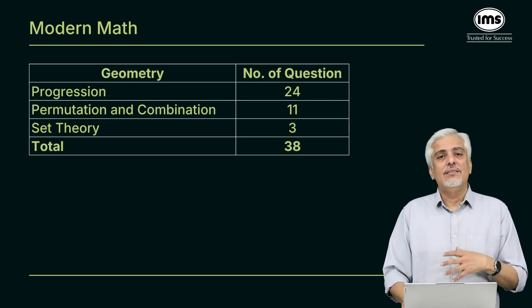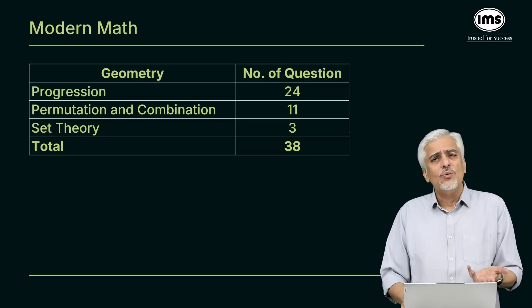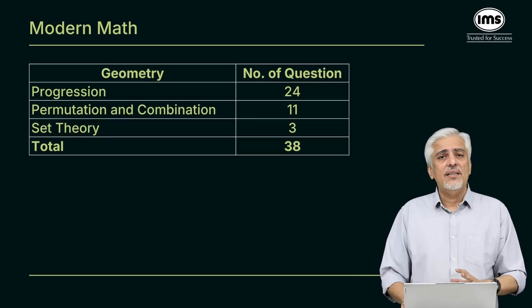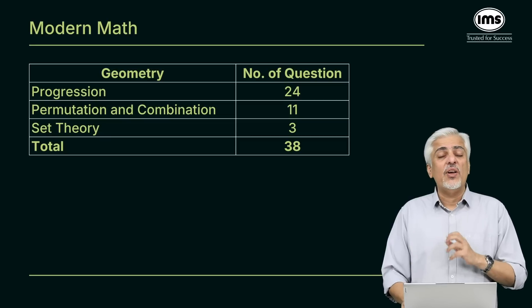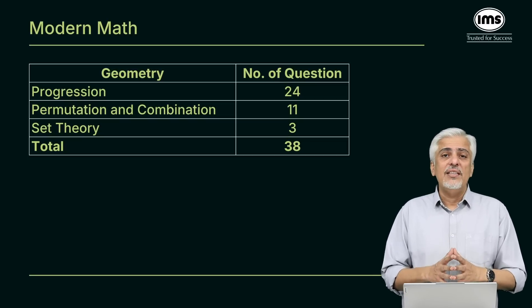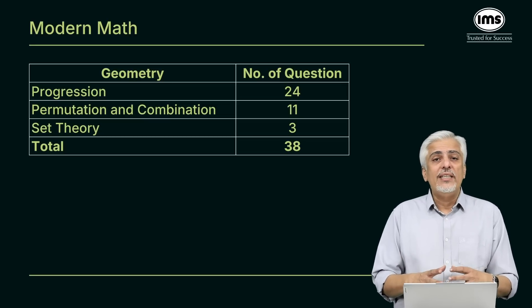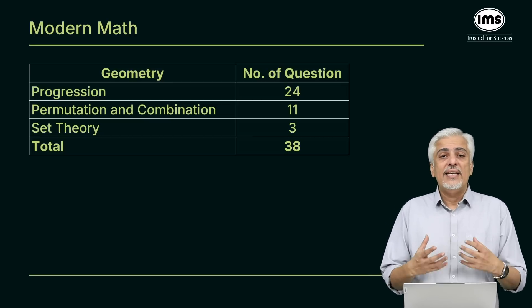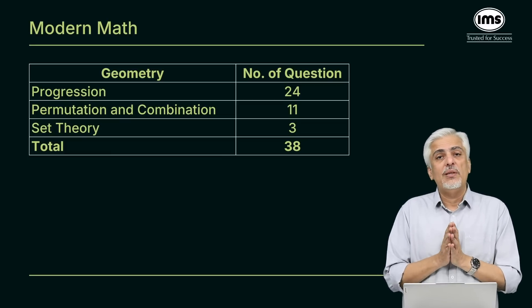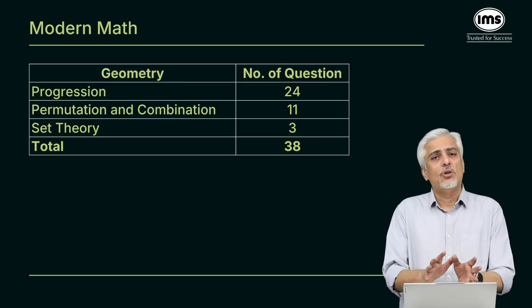Modern maths. I'm sure a lot of people hate permutation combination, do not like probability. Don't worry about it. Go through only progressions. AP-GP. For me that becomes very important. Also according to me, AP-GP is an area which can be really revised, a lot of questions can be solved by putting values. You really don't need to actually solve them. And hence those 24 questions out of 38 make up a big chunk for me for modern maths. Yes, a lot of people will consider logs in modern maths.